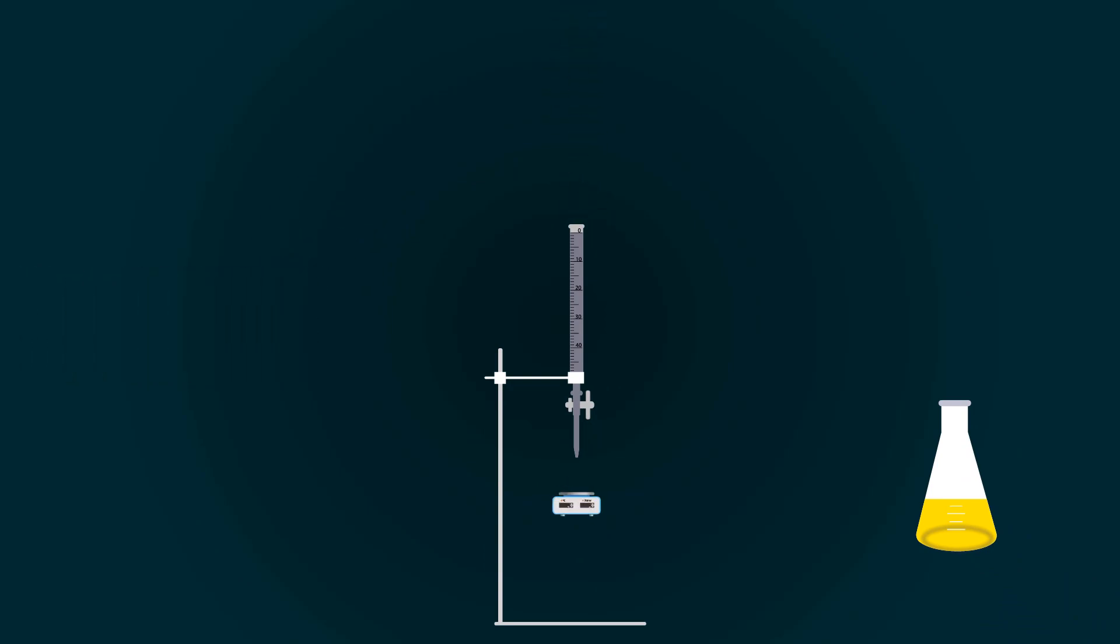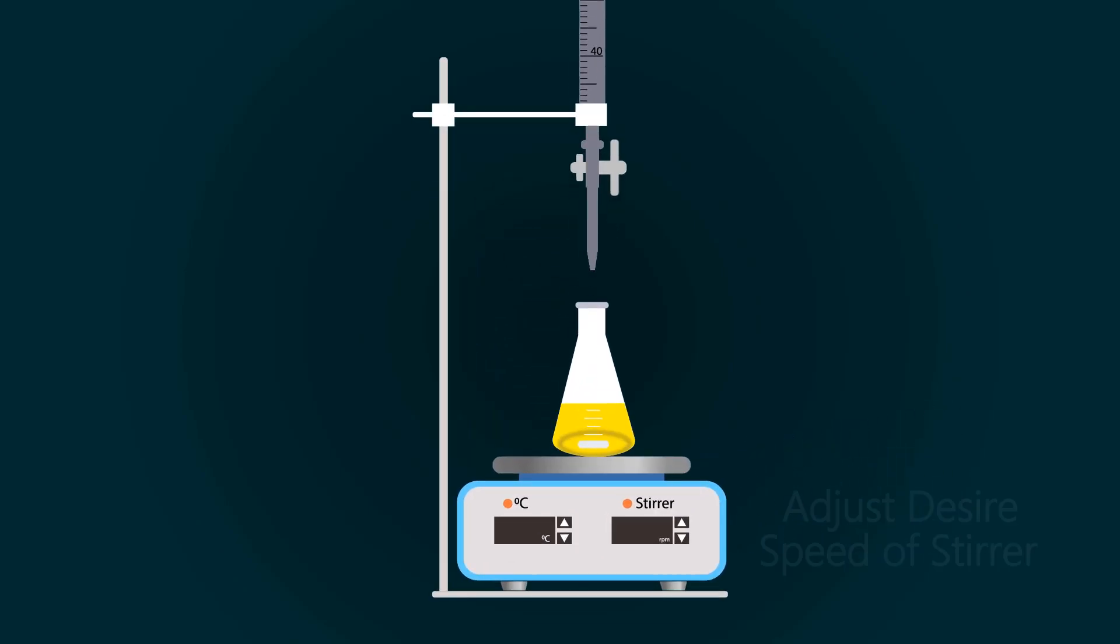Now adjust the magnetic stirrer under the burette. Add a magnetic bar into the conical flask. Put this conical flask onto the magnetic stirrer. Now adjust your RPMs.